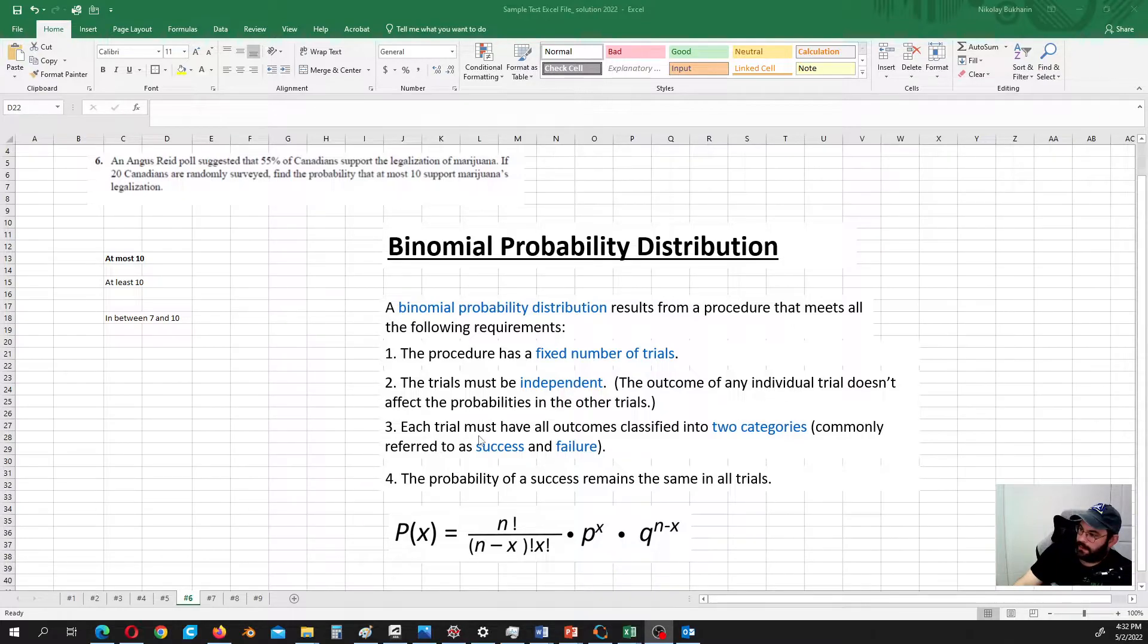Each trial must have all outcomes classified into categories. So that's what we have in this case. They support or they do not support. And the probability of success remains the same in all trials. And it is the case. And it is equal to 0.55.